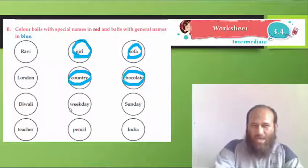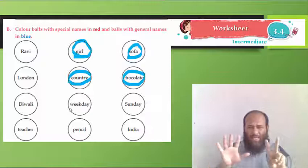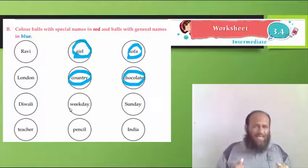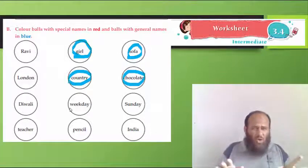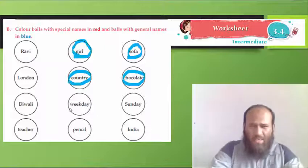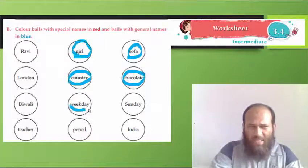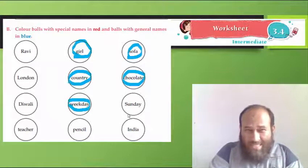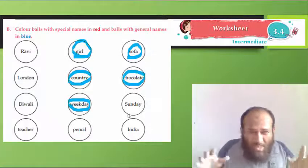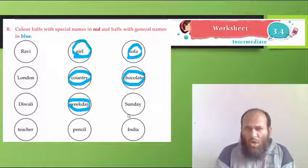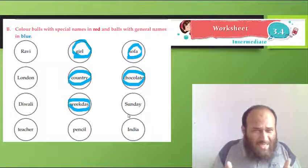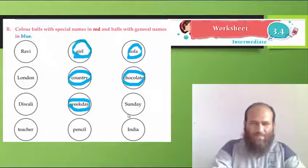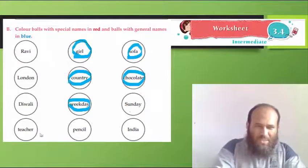Weekday. How many days are there in a week? Seven. Did I say any special day? No. So, weekday is a general name. It can be Monday, Tuesday, Wednesday. But when I say Sunday, am I talking about any day? No. Is it a special day? Yes. So, I will not color it blue.